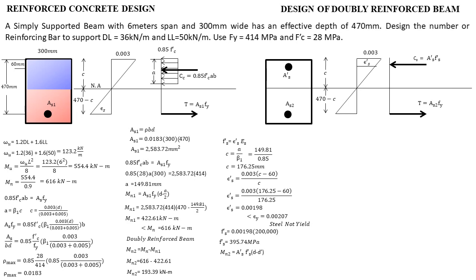Using MN2 = A's · f's · (d − d'), where d = 470 mm and d' = 60 mm, and MN2 = 193.39 kN·m, we solve for A's (the area of compression steel). This gives us A's = 1191.90 mm².